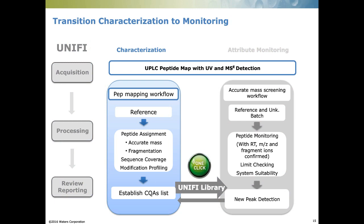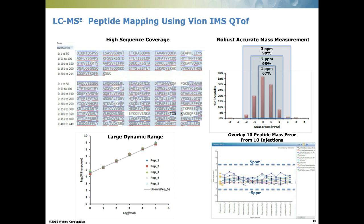Let's start from the characterization of the trastuzumab peptide map. After filtering out semi-digests, in-source fragments, and neutrals, we achieve high sequence coverage. The red and blue lines represent the coverage of the heavy and light chains. Ion mobility cutoff achieves higher accurate mass measurement. Under MSE mode, 99% of the peptides have mass error less than 3 ppm. For ten peptides across ten injections, the mass error is less than 5 ppm. A large dynamic range of five orders of magnitude ensures the accuracy of quantification.